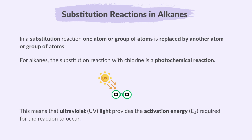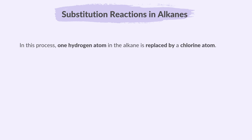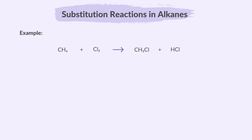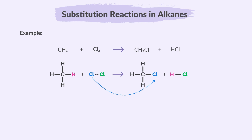Light energy is needed to break the bonds in the chlorine molecules to start the reaction off. In this process, one hydrogen atom in the alkane is replaced by a chlorine atom. Here is an example of monosubstitution using methane and chlorine. In this reaction, methane reacts with chlorine in the presence of UV light. A chlorine atom substitutes one hydrogen atom in methane, forming chloromethane and releasing hydrogen chloride.